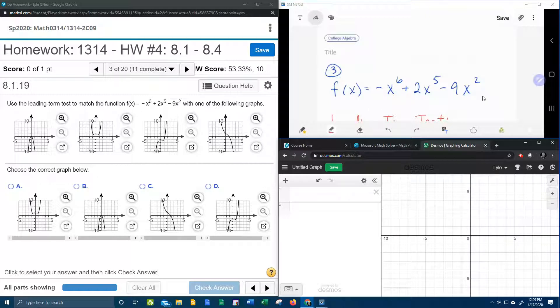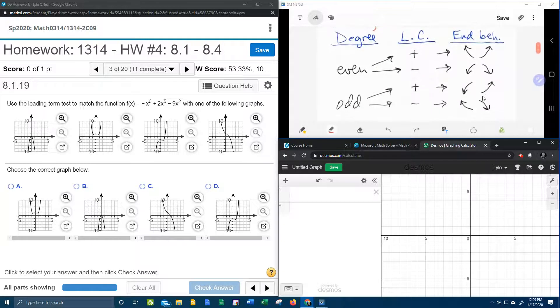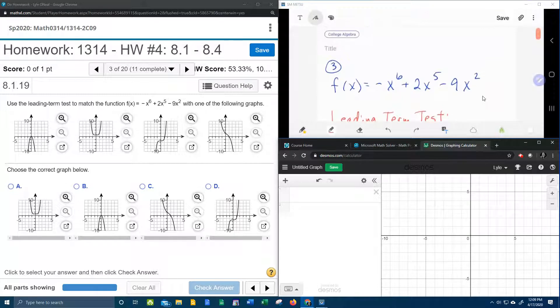And so I've got my function written down over here, as well as the leading term test again. So we're going to have to find the degree and the leading coefficient in order to determine the end behavior, and that will allow us to select the correct graph.